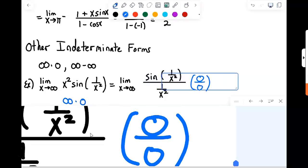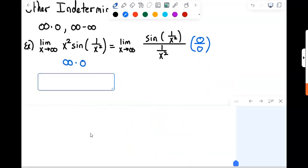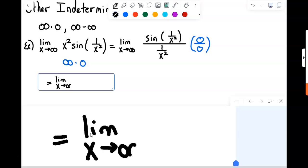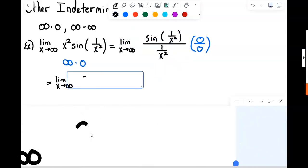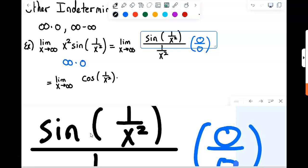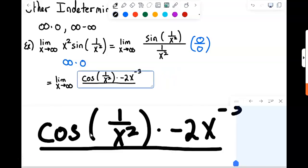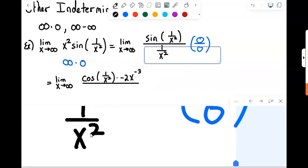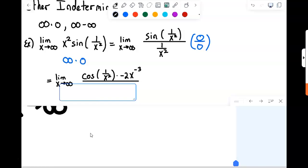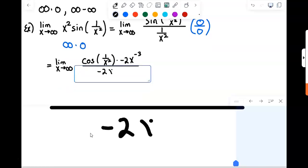So this is a zero over zero limit now. So we differentiate across the top and across the bottom. Limit as x approaches infinity of the derivative of sine, which would just be the cosine of that stuff, times the derivative of that stuff. So the derivative of that stuff would be the derivative of x to the negative second would be negative 2x to the negative third. And that's all over the derivative of 1 over x squared. Again, the derivative of x to the negative second, which would be negative 2x to the negative third.